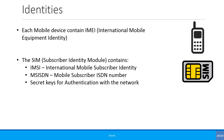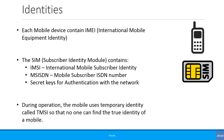You cannot find out what these keys are. During registration, the mobile uses temporary identities called TMSI — Temporary Mobile Subscriber Identity — and these TMSIs are used so that no one can actually find out the true identity of a mobile. This is an additional privacy procedure.